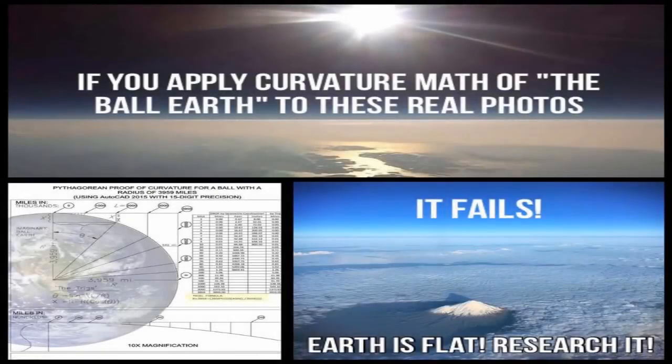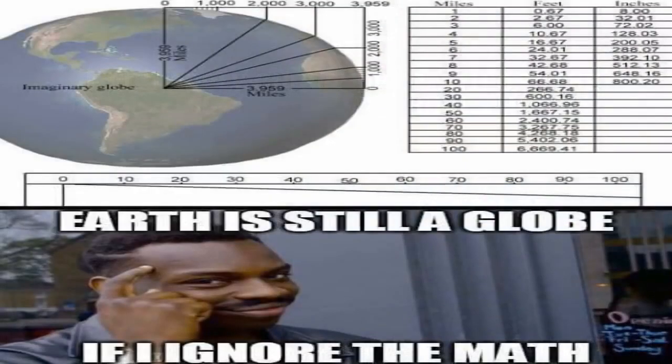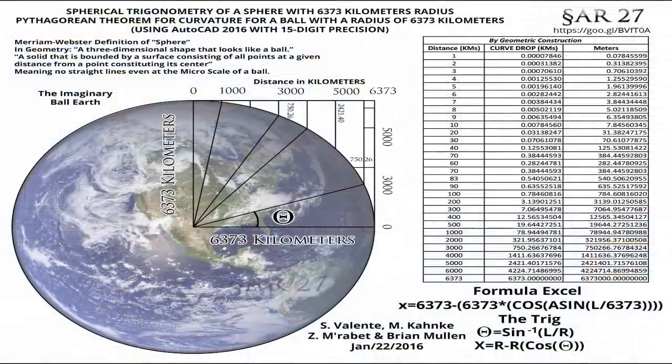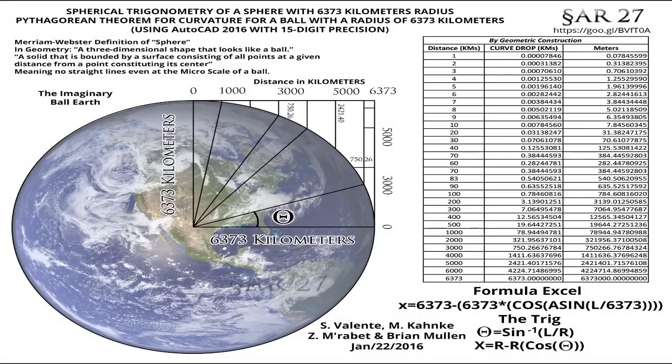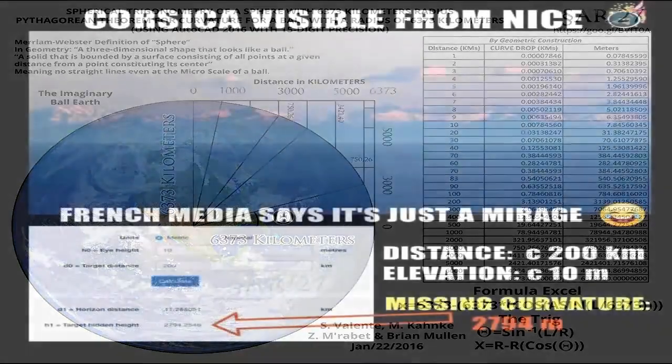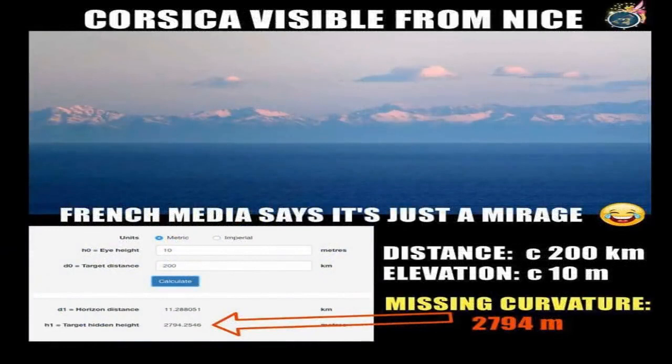To begin with, the curvature formulas and curvature calculators that exist for the globe model were created by you globe Earth proponents, not us flat earthers. We are simply using the figures and formulas you yourselves claim as representing reality, and proving through easily observable, demonstrable, repeatable results that the alleged curvature does not exist. Non-professor Dave tries to belittle flat earthers for using the parabolic 8 inches per mile squared approximation, but then refuses to mention the fact that this formula gives the same results as the more complicated trigonometrical formula for up to 300 miles.